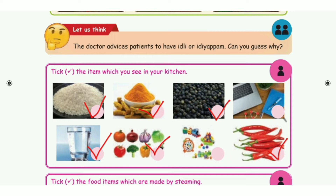First, take page number 126. Tick the item which you see in your kitchen. The answers are the 1st one, 2nd one, 3rd one, then 5th one, 6th one, and the last one.